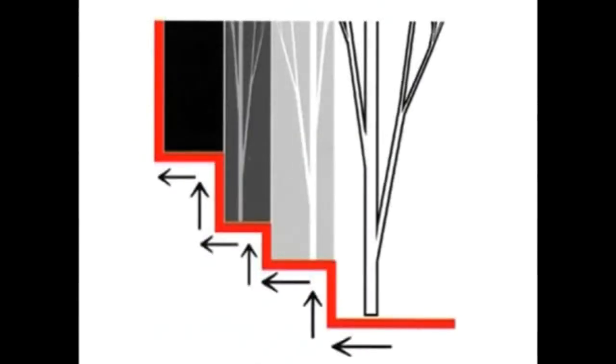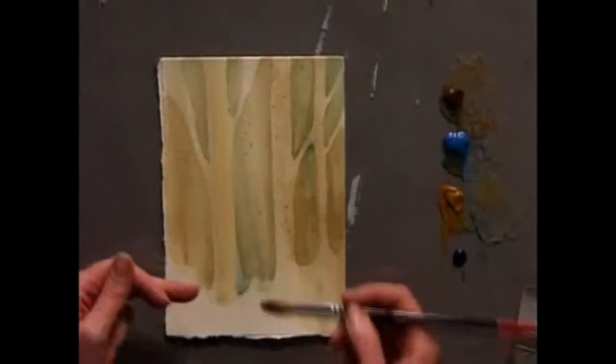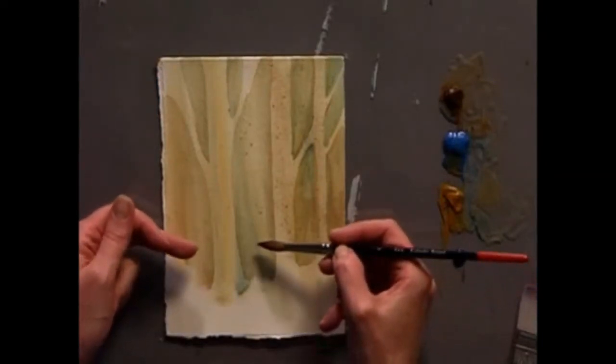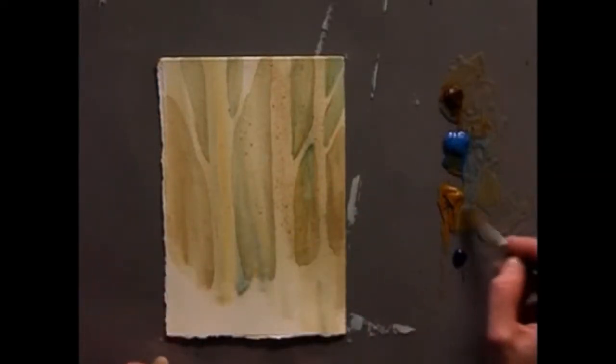You can see that the layers of the trees move further into the distance and they rise up and back, much like climbing a set of stairs. So the next layer will begin by stepping up the page so it appears to be back in the distance.